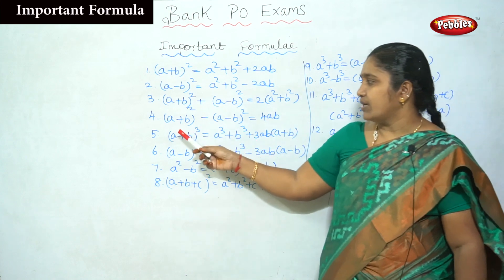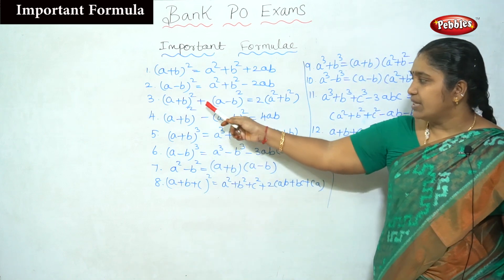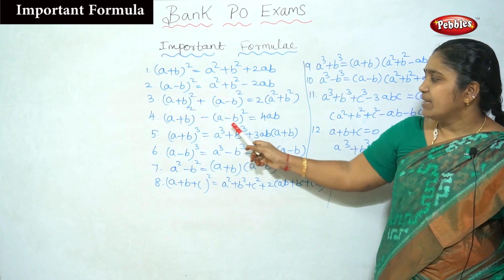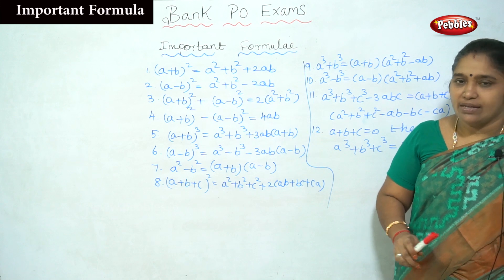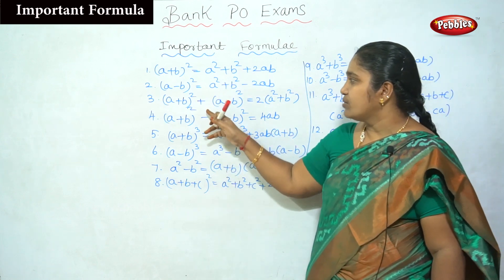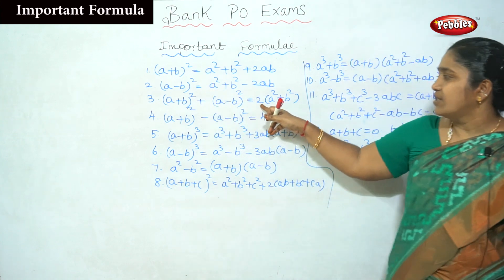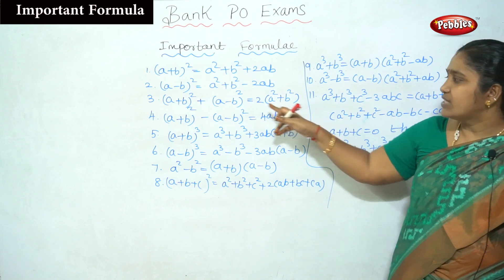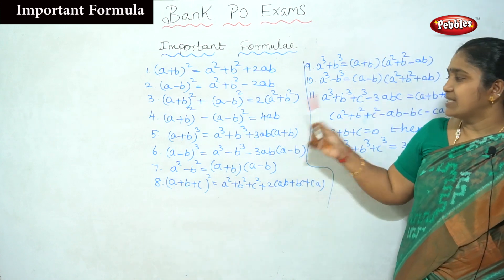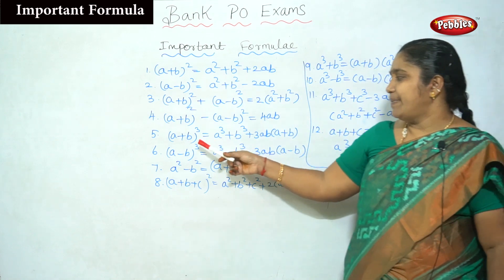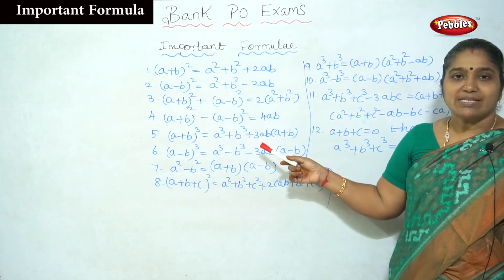The fourth formula: (a + b)² - (a - b)² = 4ab. So to summarize: when we combine these two formulas with a plus sign, the answer is 2(a² + b²); when combined with a minus sign, the answer is 4ab.